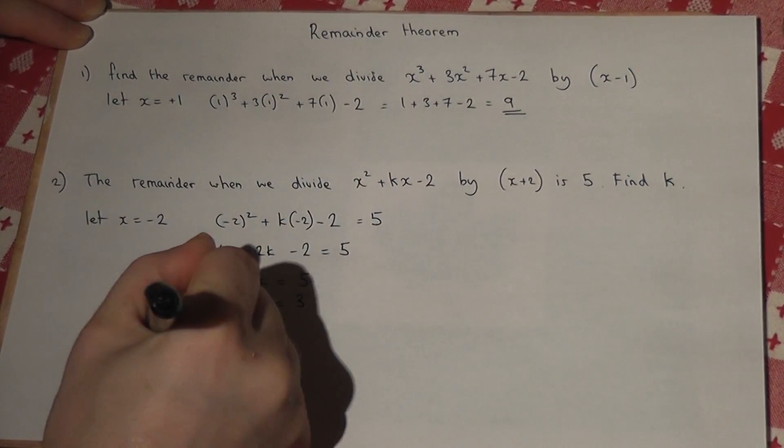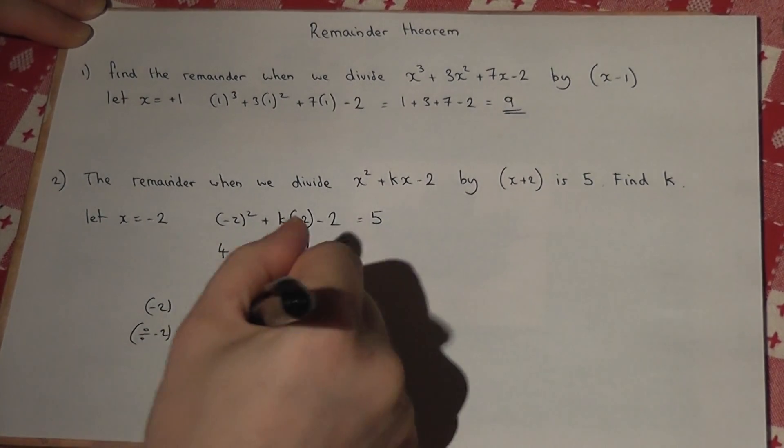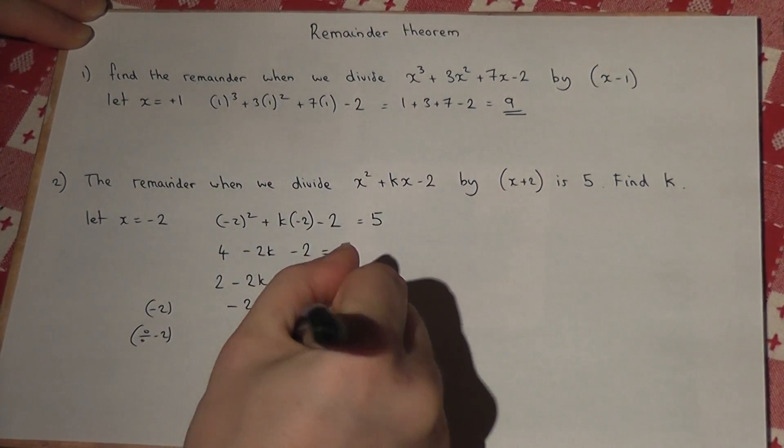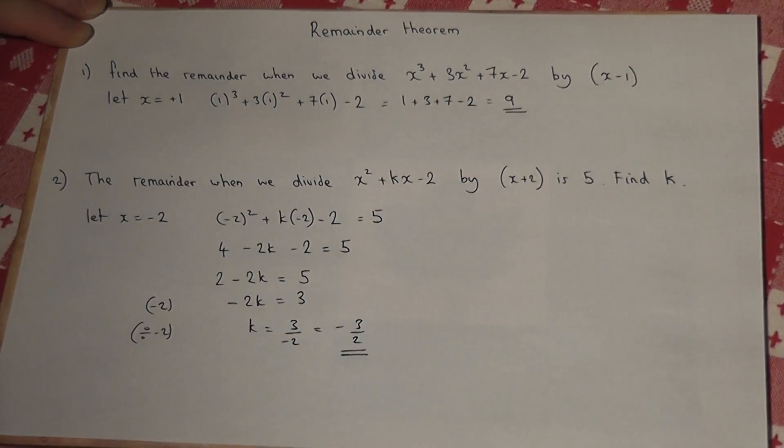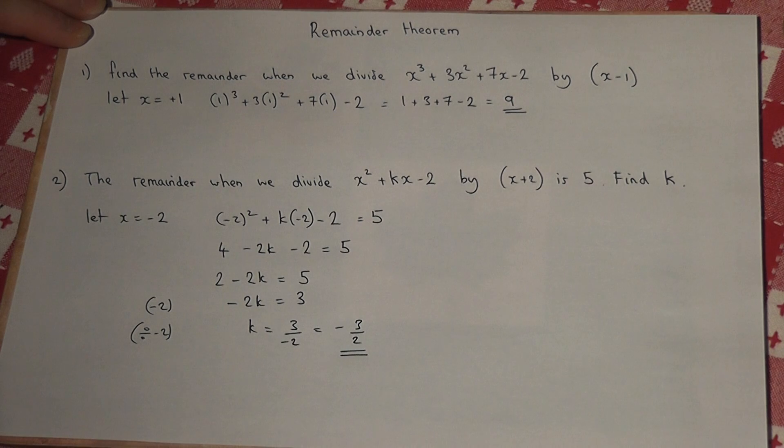And then divide by negative 2, I get k equals 3 over negative 2, or negative 1 and a half. And that is the value of k.